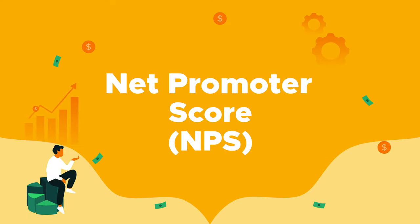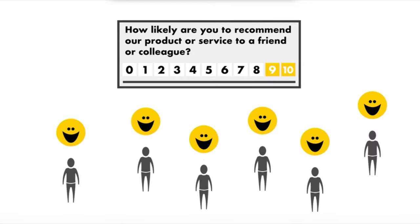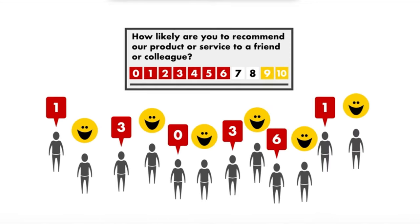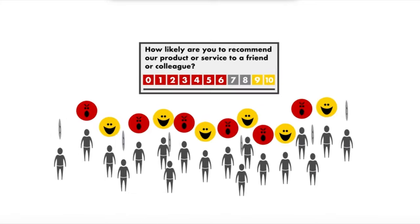Next up is Net Promoter Score, or NPS — a business metric that helps you measure customers' relationship with your company. Your customers answer a key question on a scale from 1 to 10. You then subtract the percentage of detractors from the percentage of promoters to get the Net Promoter Score. Scores can range from negative 100 to plus 100, and the goal is to get as close to positive 100 as possible.